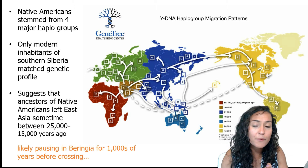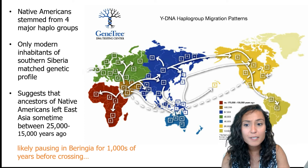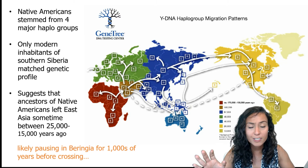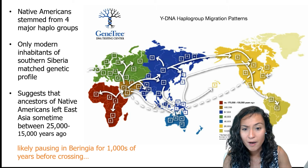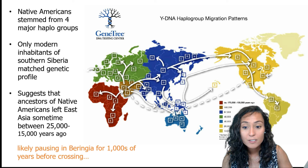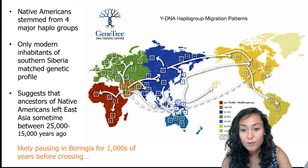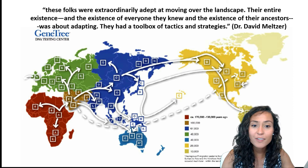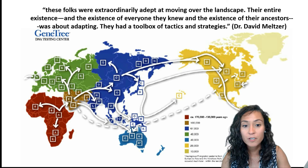These findings complicate the sequence of migration events proposed by the land bridge theory. Using mutation rates in human DNA, geneticists calculate that ancestors of Native Americans left East Asia sometime between about 25,000 and 15,000 years ago. Traditionally, archaeologists hypothesized that these migrants traveled rather quickly across the Beringian landmass to reach warmer, more hospitable lands. However, genetic evidence suggests that the earliest Americans paused somewhere en route, evolving in isolation on Beringia for thousands of years before entering North and South America.